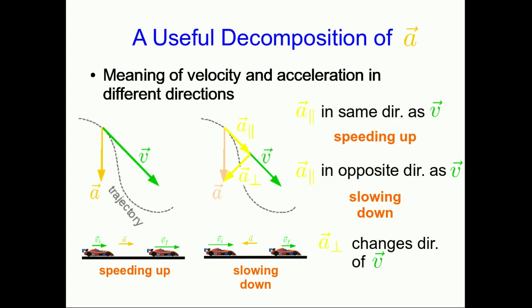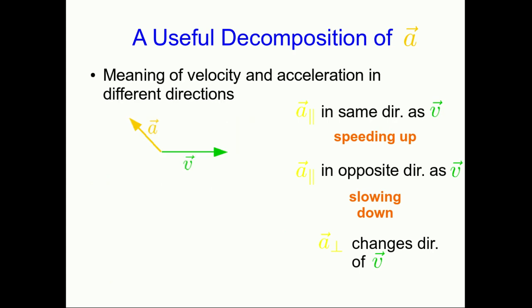Looking at a case where the acceleration is opposite the direction of velocity and to the side: this object must be slowing down because the parallel component of the acceleration is opposite the velocity, and the trajectory must also be curving upward. In another case, an object must be speeding up and its trajectory must be curving to the right. We can analyze any two-dimensional motion using these ideas, but there are a couple of special cases we'll pay particular attention to.